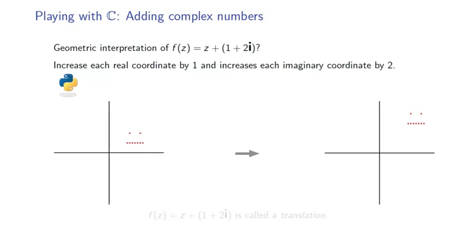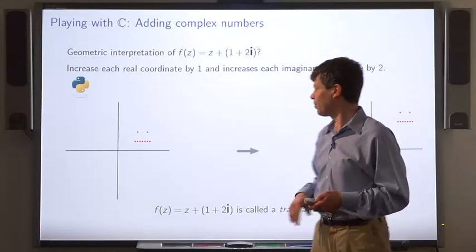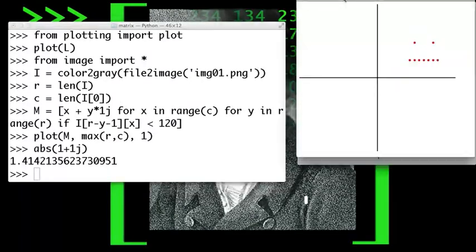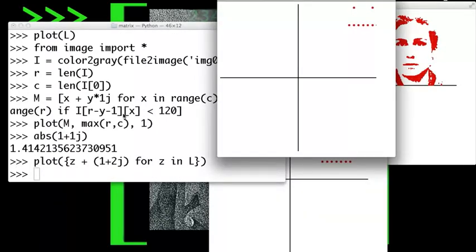So applying that function to all these points would shift them up and to the right. We call a function of this form a translation. It's said to translate a set of points. Let's use Python to translate these points in L. You can similarly translate the points from the image.